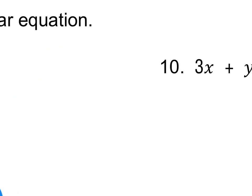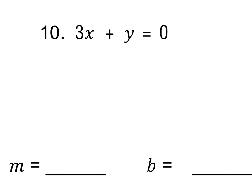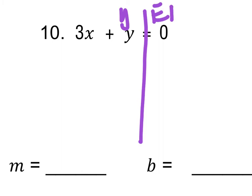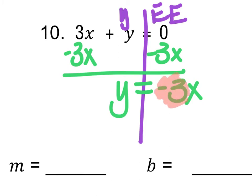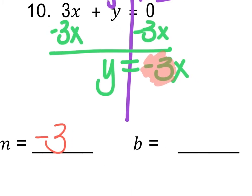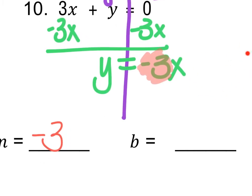For problem 10, we have 3x plus y equals 0. To solve for y, subtract 3x from both sides to get y equals negative 3x. The slope is negative 3. There's no constant term, meaning there's technically a plus 0, so the y-intercept is the ordered pair (0, 0).